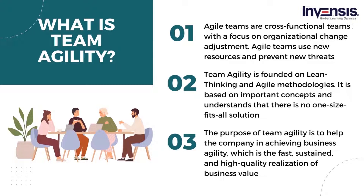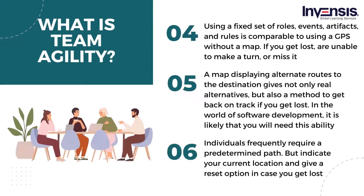The purpose of team agility is to help the company achieve business agility, which is the fast, sustained, and high-quality realization of business value. This demands both cross-team communication and teamwork inside the organizational framework. Let us understand this better with an example: using a fixed set of roles, events, artifacts, and rules is comparable to using a GPS without a map.